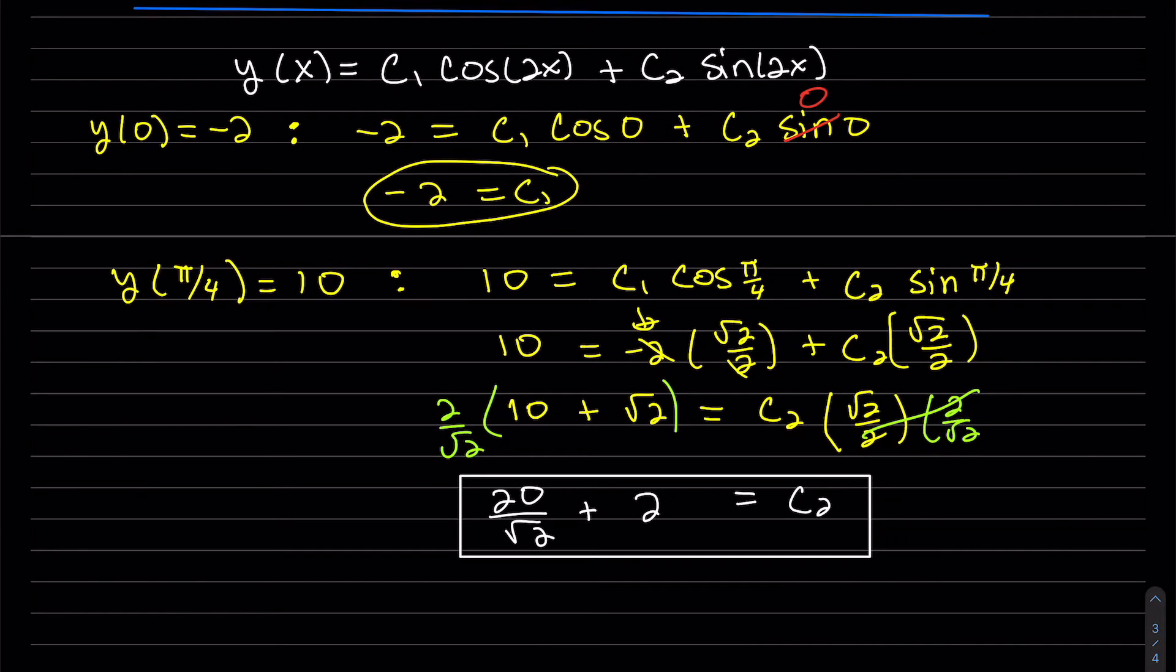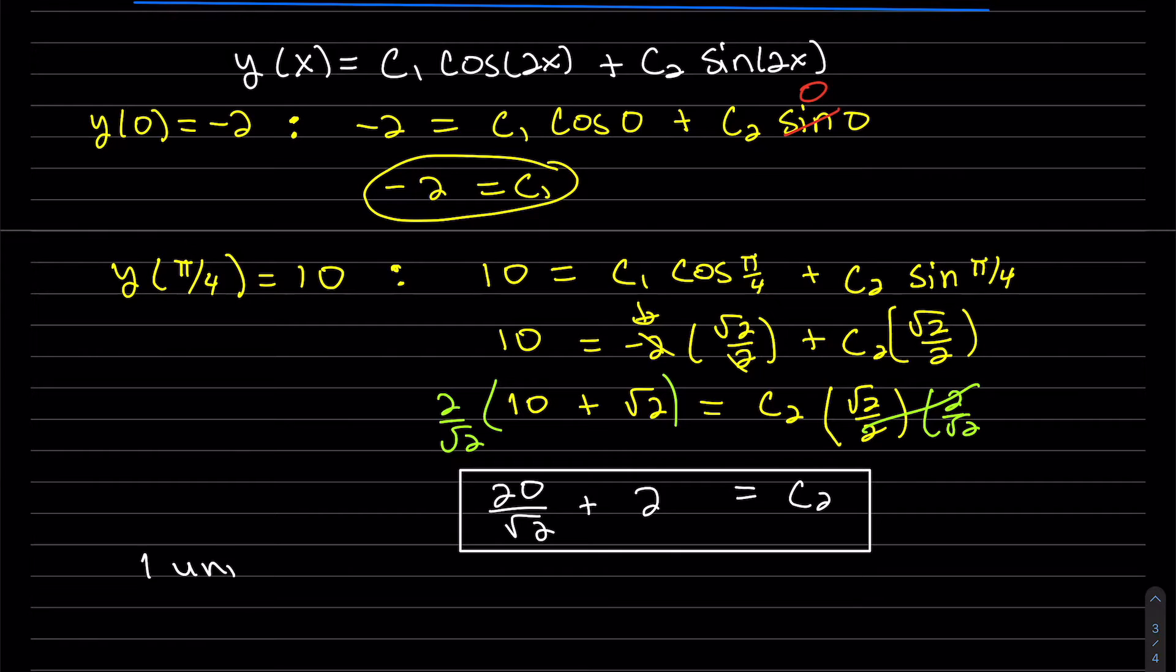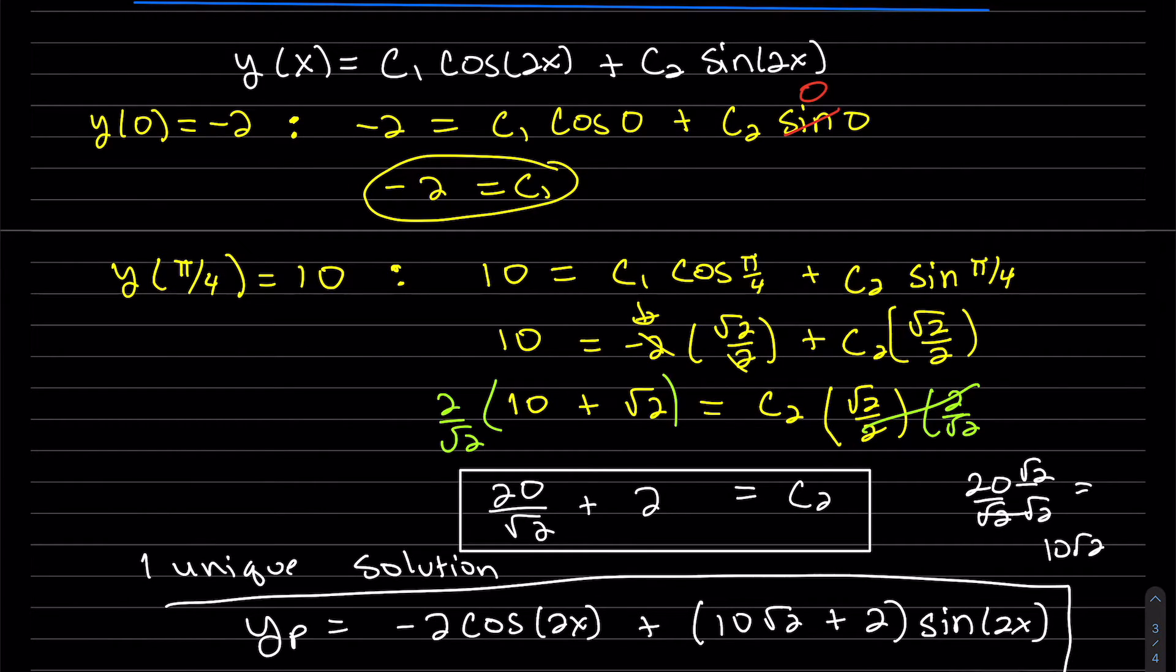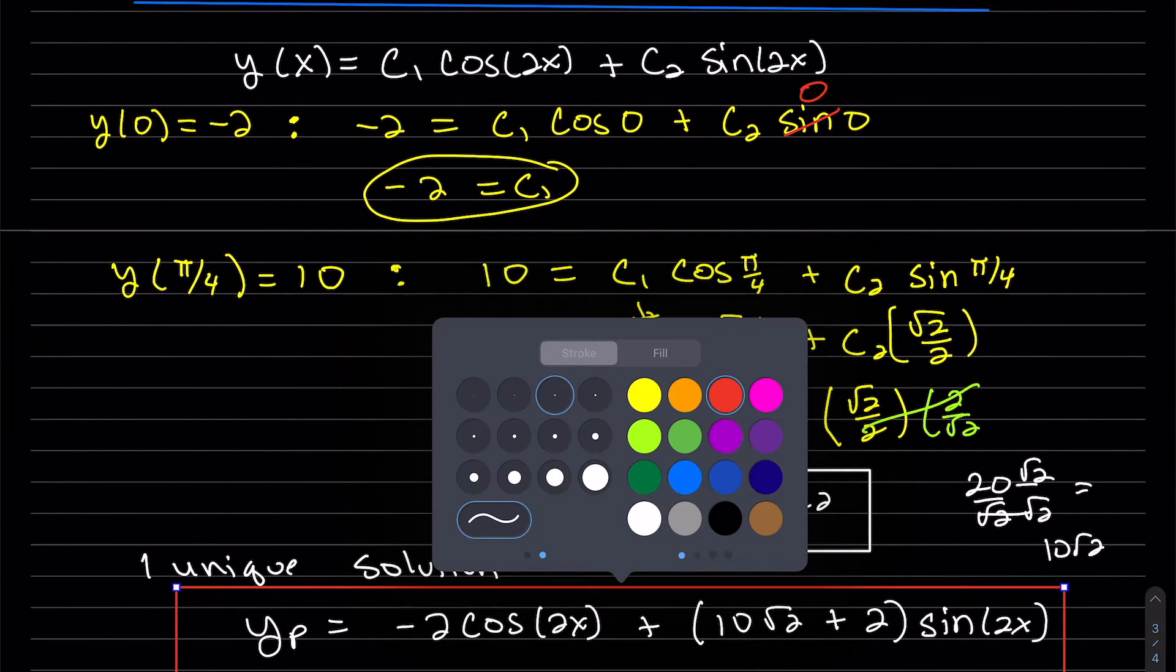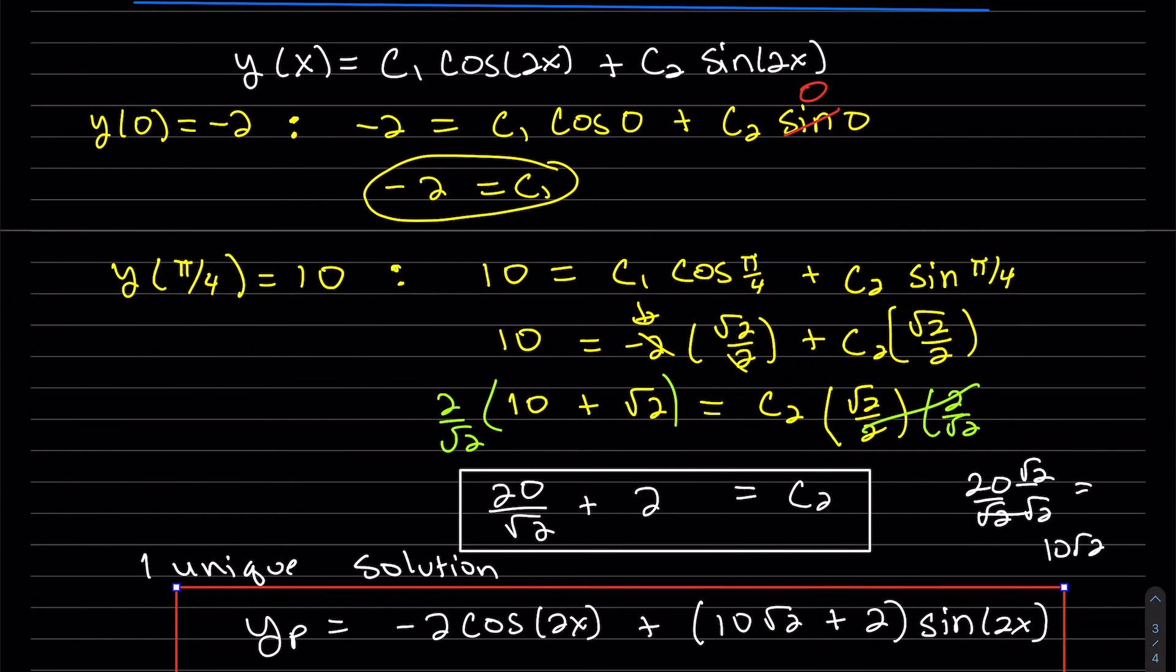So let's go ahead and plug in C2. So we have found one unique solution. So our y particular solution, we can plug it in. Oh, we can probably rationalize that. It'll be prettier. Looks like it's 10 root 2. And there's our unique solution.